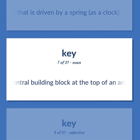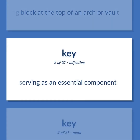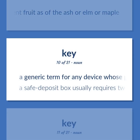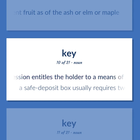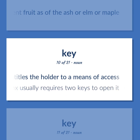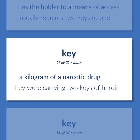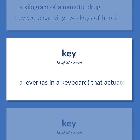Key: The central building block at the top of an arch or vault. Serving as an essential component. A winged often one-seed indehiscent fruit, as of the ash, elm, or maple. A generic term for any device whose possession entitles the holder to a means of access — 'A safe deposit box usually requires two keys to open it.' A kilogram of a narcotic drug — 'They were carrying two keys of heroin.' A lever, as in a keyboard, that actuates a mechanism when depressed.